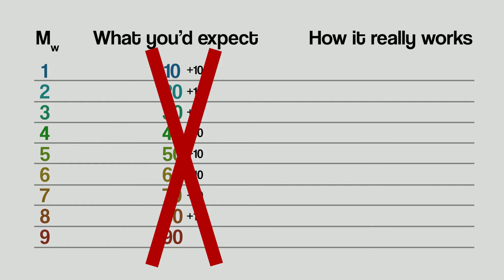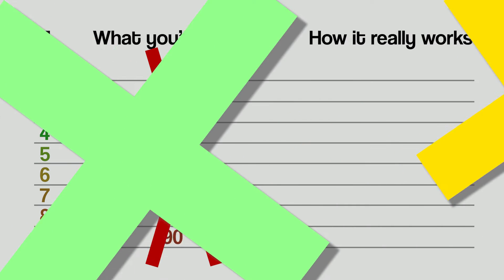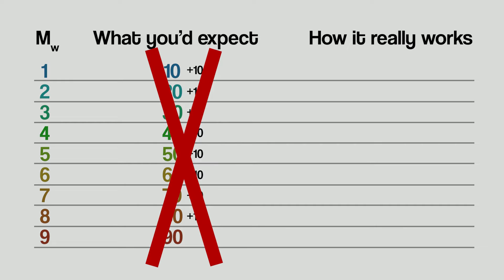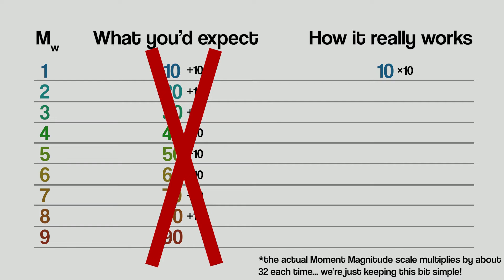On the Moment Magnitude Scale, you don't add each time you go up by one magnitude — you multiply. Just like before, our magnitude 1 earthquake releases 10 units of energy. Now to get to the next magnitude, we don't add 10, we multiply by 10. That means a magnitude 2 would release 100 units of energy. From there, we multiply by 10 again, so magnitude 3 would be 1,000 units of energy. Then we multiply 1,000 by 10, so magnitude 4 would release 10,000 units of energy.